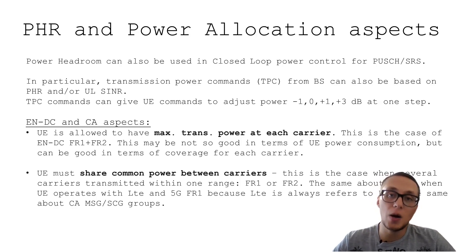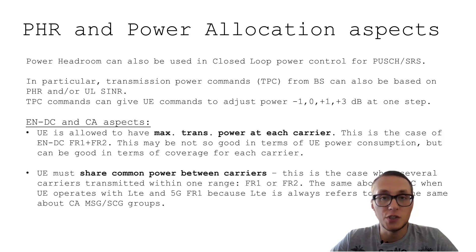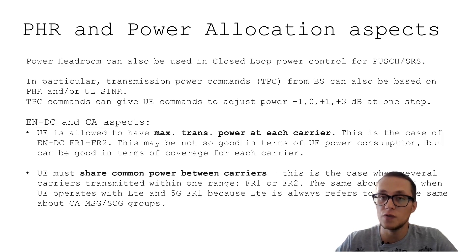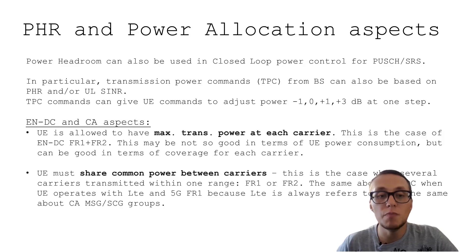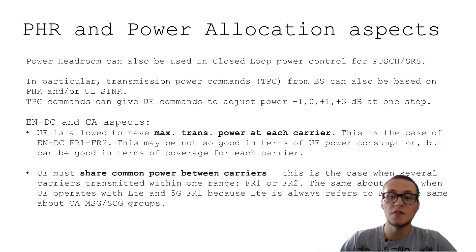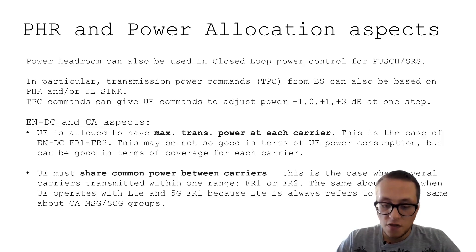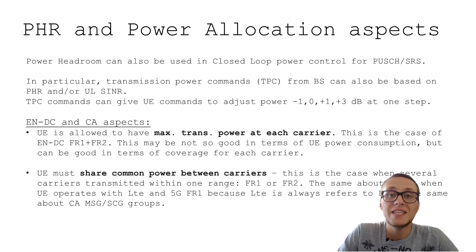In some cases — for example, in the case of NR-DC with FR1 plus FR2 transmission — the UE is allowed to have maximum transmission power at each carrier. This is not so good for UE power consumption, but it is very good for uplink coverage. However, in other cases the UE must share common power between carriers — for example, when several transmitted carriers are within one frequency range such as FR1 or FR2, or when operating in NR-DC mode with both layers related to FR1.